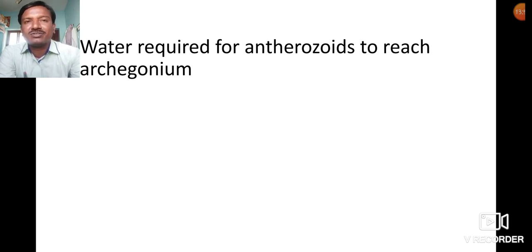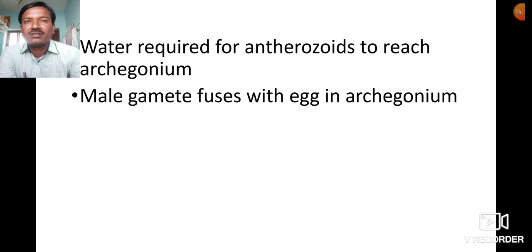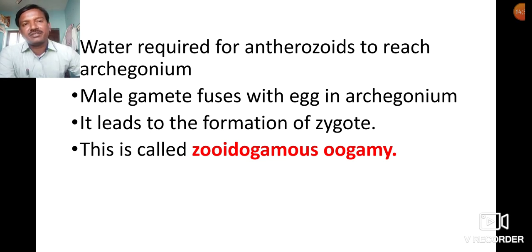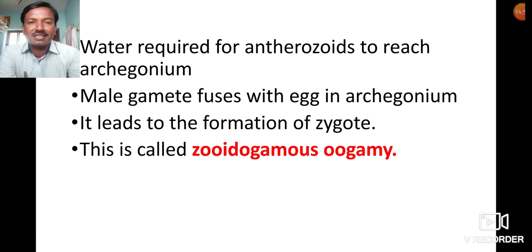Water is required for antherozoids to reach the archegonium. Antherozoids are multicellular, spirally coiled structures. Male gametes fuse with the egg cell present in the archegonium to form a zygote, so fertilization occurs in the archegonium. This type of fertilization — where motile male gametes fuse with a non-motile egg cell — is called gyrogamous oogamy.